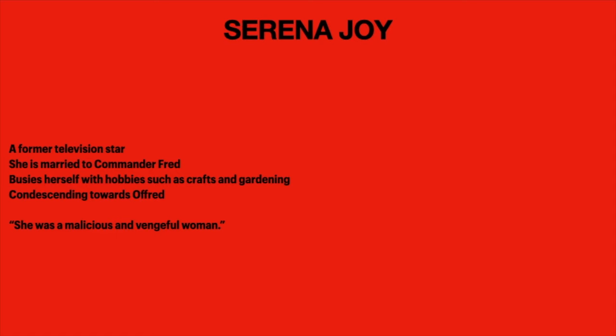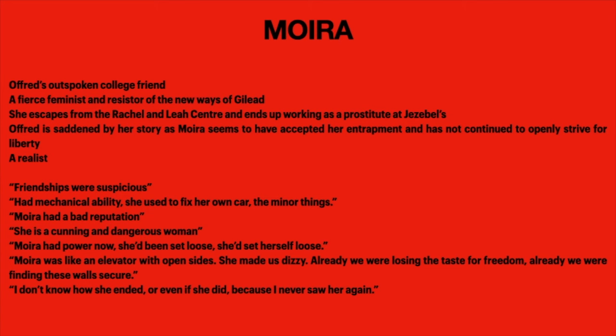Moira is such an important character — I would definitely try to write a paragraph with Moira and Offred together. She's a form of inspiration for Offred but also a foil, as she's definitely an embodiment of resistance. She's Offred's outspoken college friend, a fierce feminist and resistor of the new wave of Gilead. She escapes from the Rachel and Leah Center and ends up working as a prostitute at Jezebel's. Offred is saddened by Moira's story, as Moira seems to have accepted her situation and has not continued to openly strive for liberty.